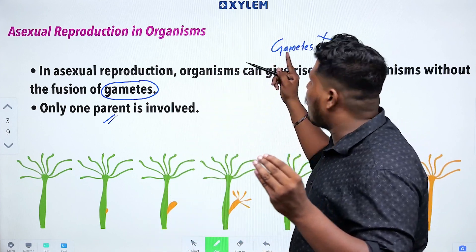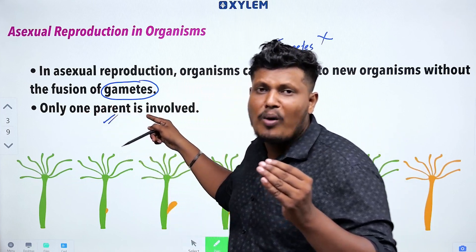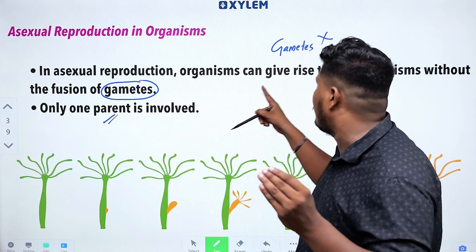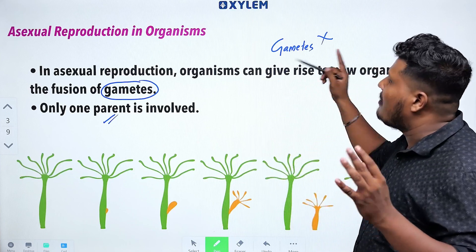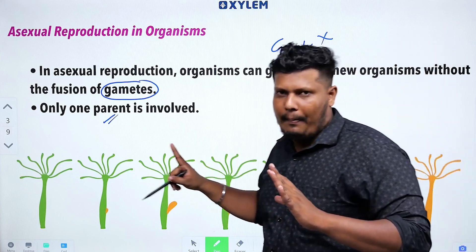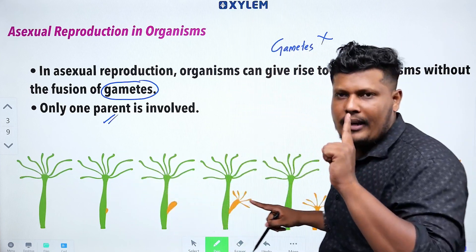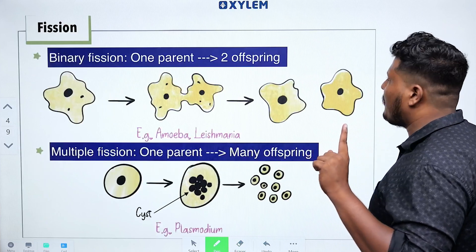So to summarize asexual reproduction: gametes are not formed, gametes are not fused, and only one parent is involved. Now we can study the modes of asexual reproduction.